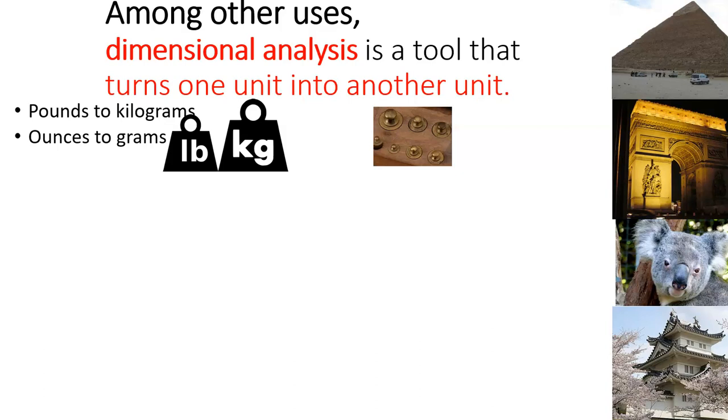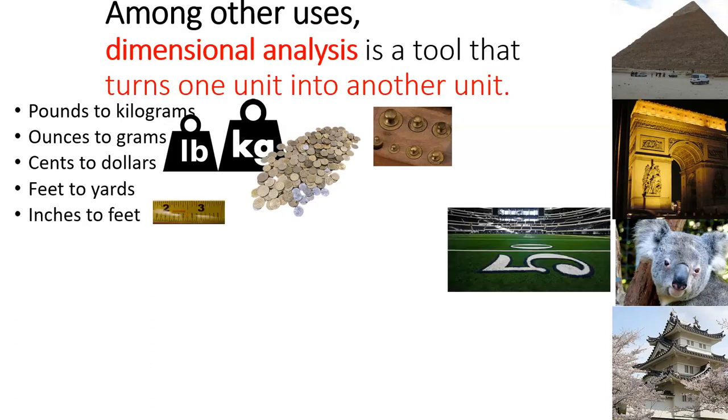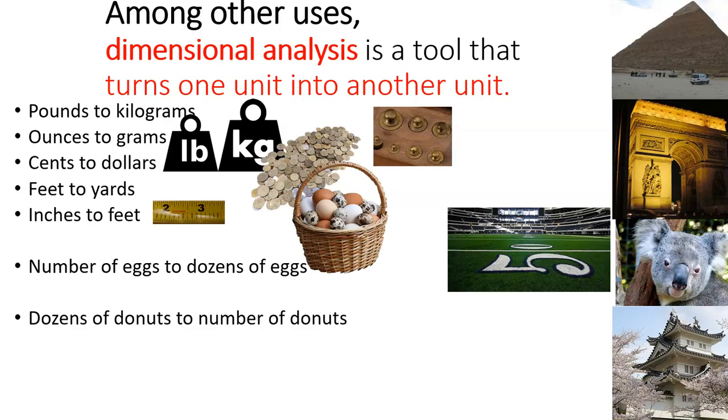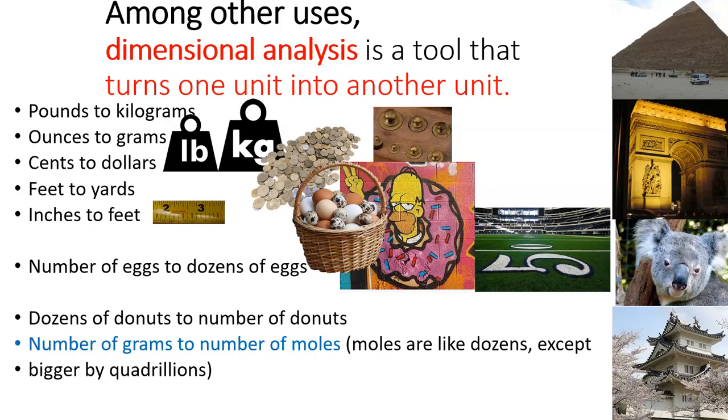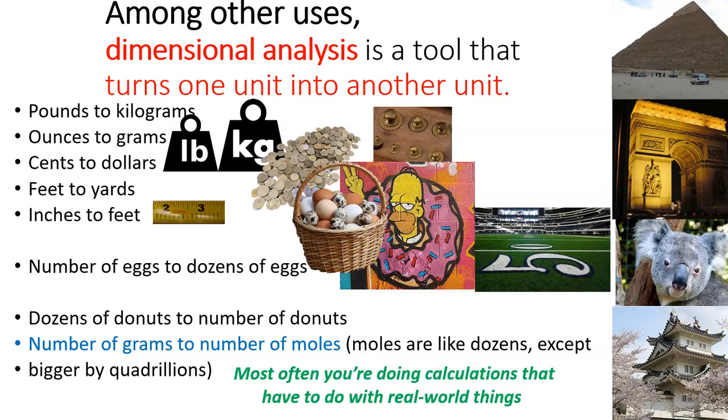But there are other times that use a lot more routine things that you'll run across in a class, for example, something like cents to dollars or feet to yards or inches to feet. Other times it's really everyday stuff like number of eggs to dozens of eggs or dozens of donuts to number of donuts. And the thing that we're building up to for the next video actually is being able to talk about number of grams to number of moles and back and forth. And a mole is a unit in chemistry that's the concept exactly like a dozen except it's bigger by quadrillions and quadrillions. So we're going to work on everyday things first and then move on to moles. But the main thing that all these different things have in common is they involve calculations that have to do with real world things.